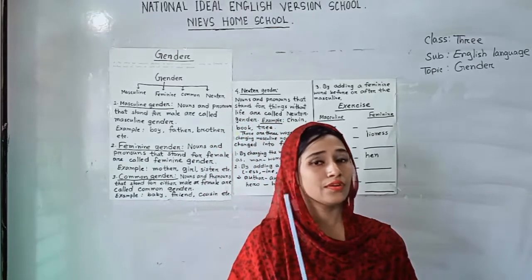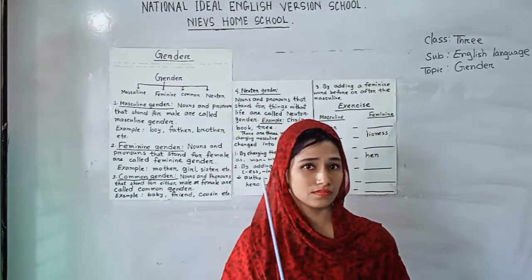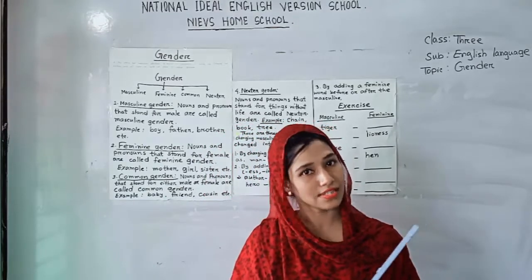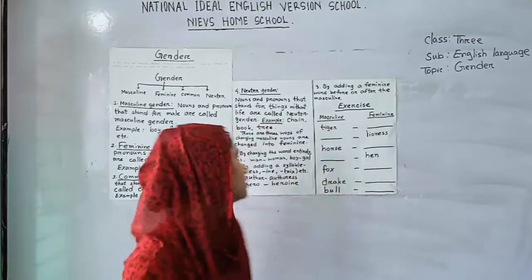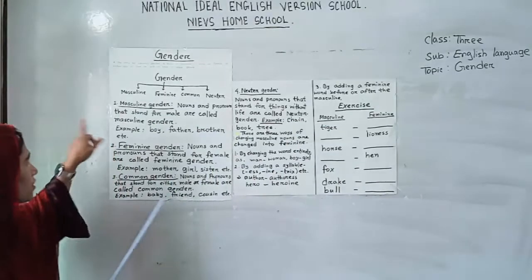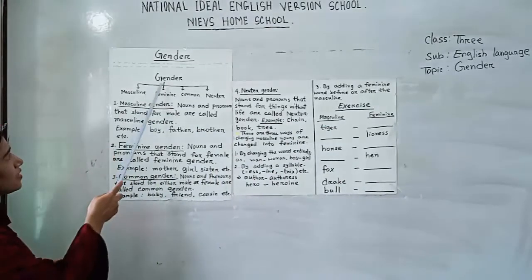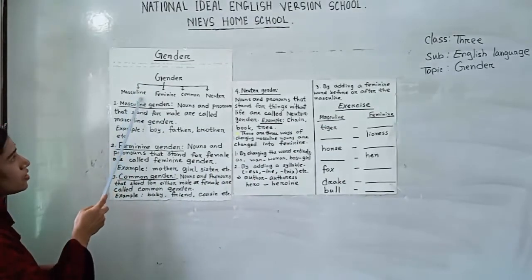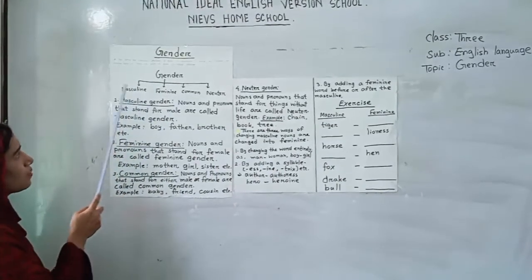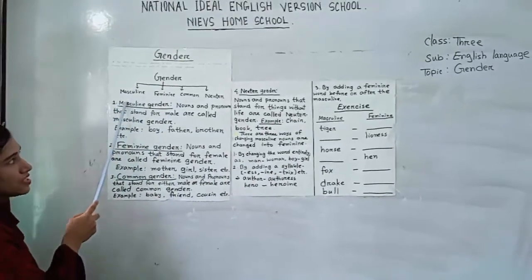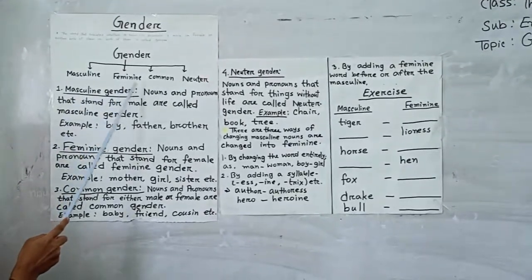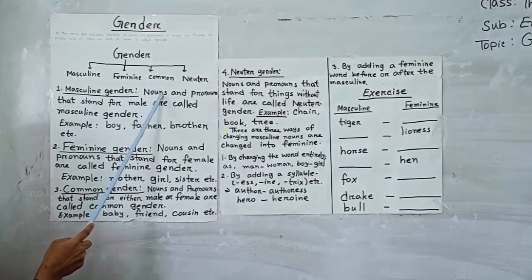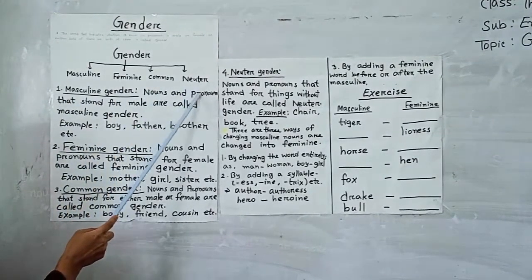Here we will know about its classification. Look dear students, please look at the words. Gender has 4 types: Number 1, masculine gender. Number 2, feminine gender. Number 3, common gender. And number 4, neuter gender.